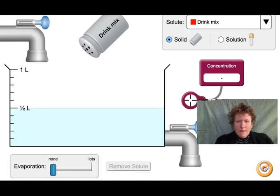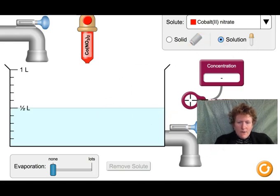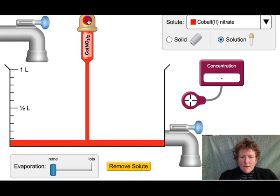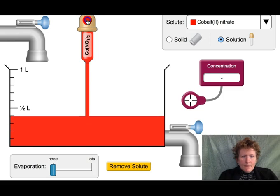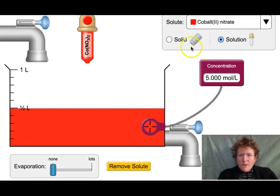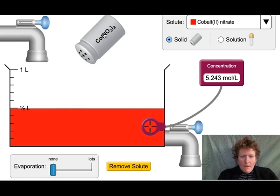So we're going to reset here and instead of using the shaker, we're going to use solution. We're going to start with cobalt nitrate here and we're going to drain the tank. So we're just filling it with solution. We're going to fill it to half a liter. And remember I got the solution over here by clicking this button here. Now we can use the concentration meter.